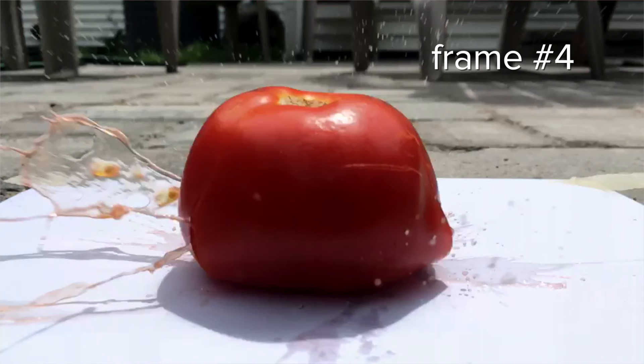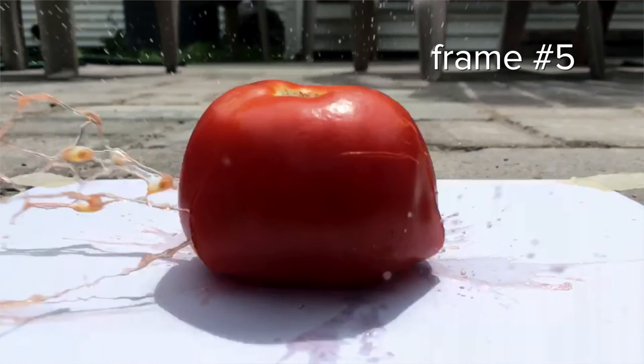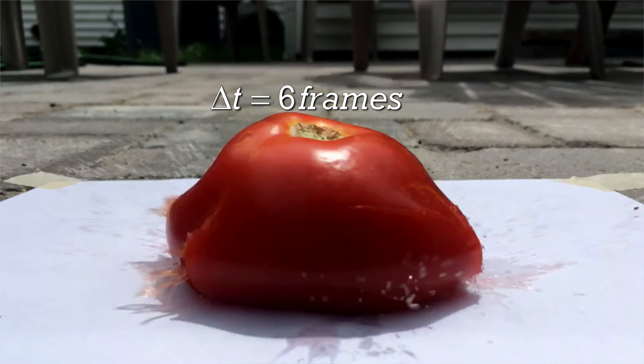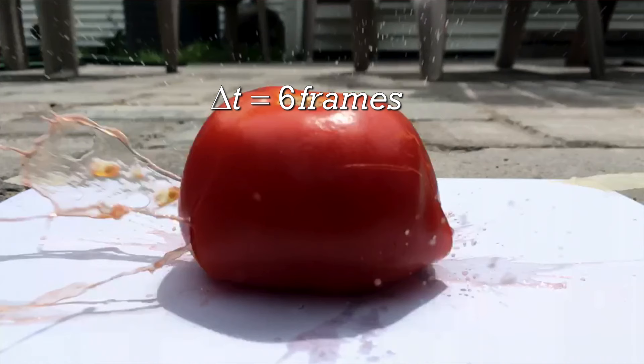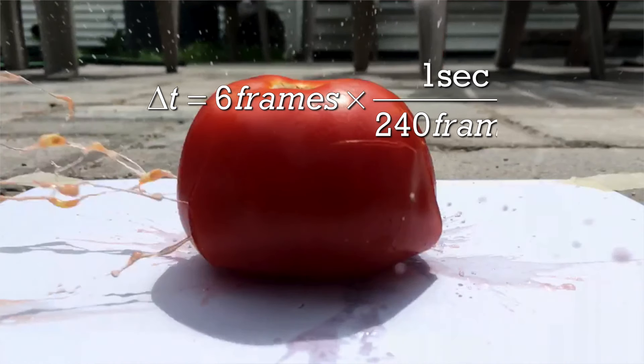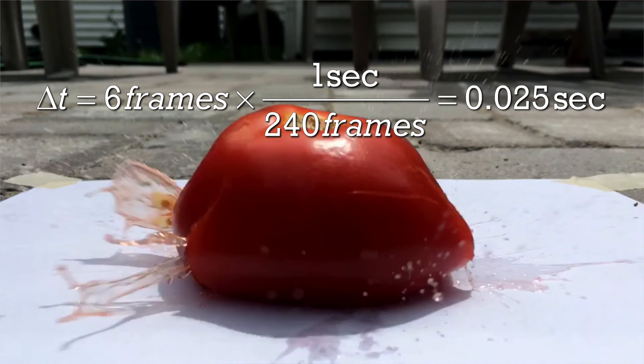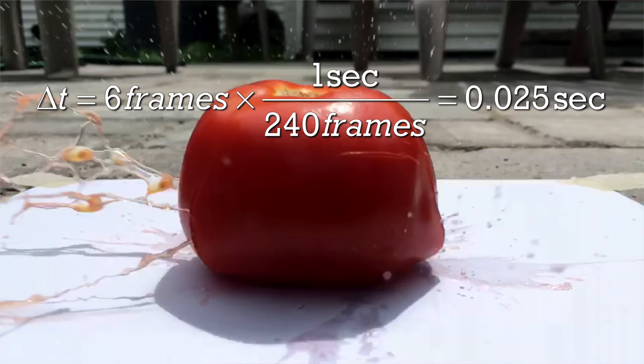The collision lasts for a total of six frames. This video has 240 frames every second. Therefore, the change in time is six frames times one second divided by 240 frames, or 0.025 seconds.